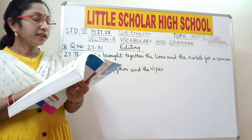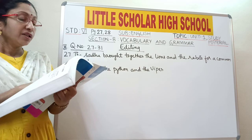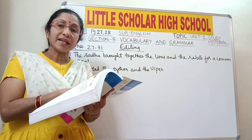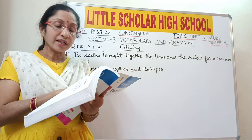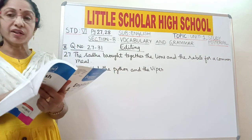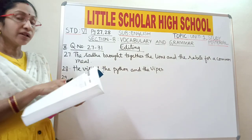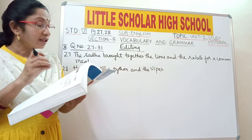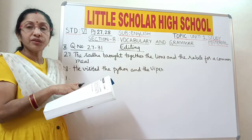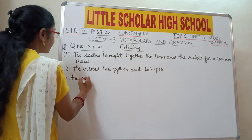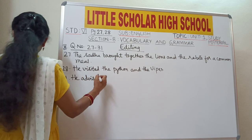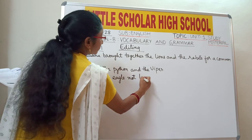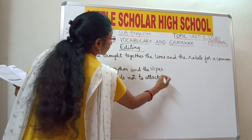Question 29: 'He advised a eagle not to attack the little chicks that had lost their mother.' The sadhu is talking about a particular eagle that attacked the little chicks. So the article 'a' should be replaced with the article 'the', because we are talking about a particular eagle we know. Write: 'He advised the eagle not to attack the little chicks that had lost their mother.'